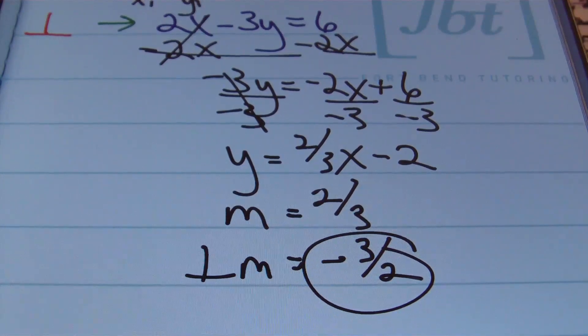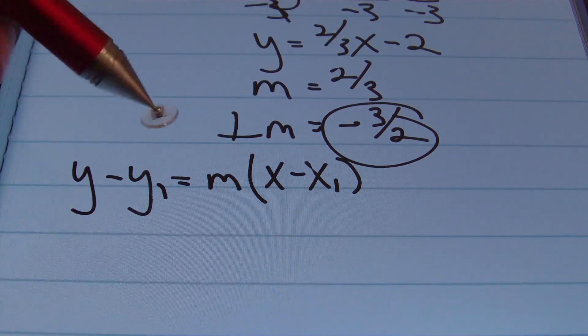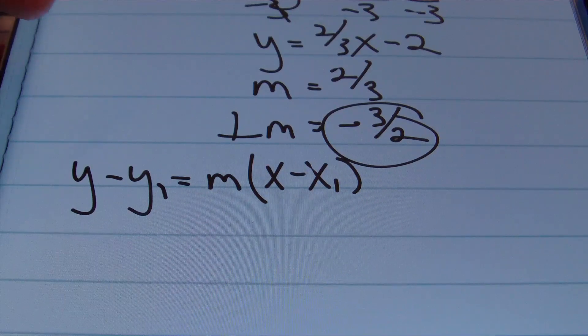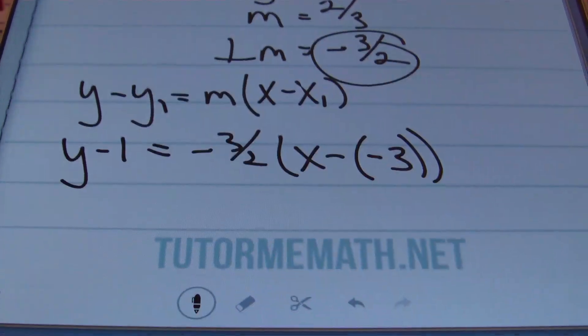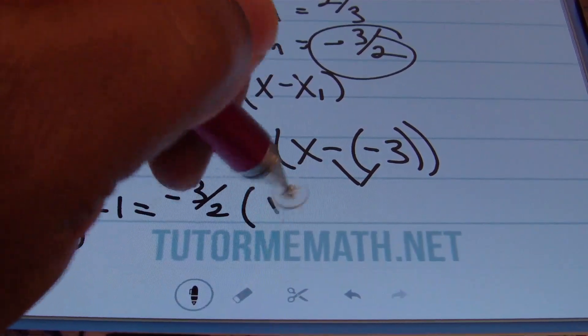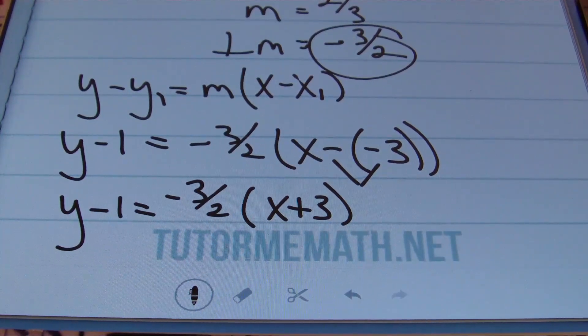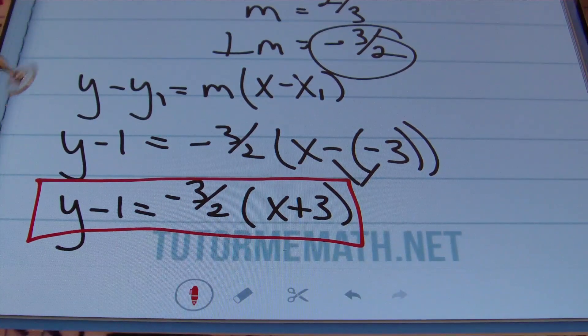Using the point-slope formula y minus y1 equals m times x minus x1, we plug in y1 as 1, slope as negative three-halves, and x1 as negative 3: y minus 1 equals negative three-halves times x minus negative 3. Combining signs gives y minus 1 equals negative three-halves times the quantity of x plus 3. That's the answer.